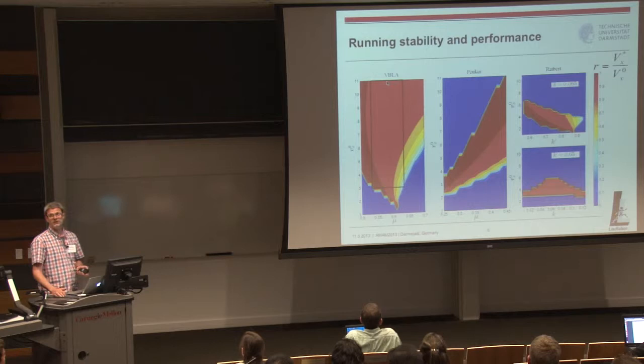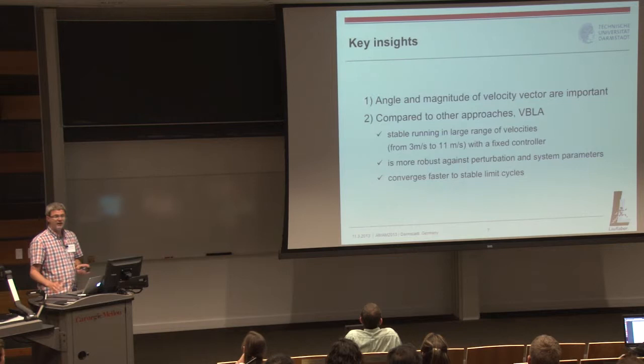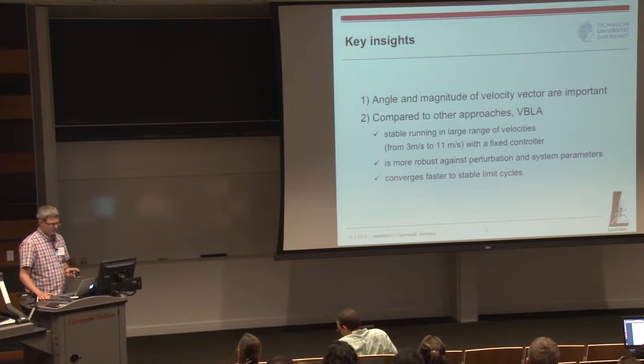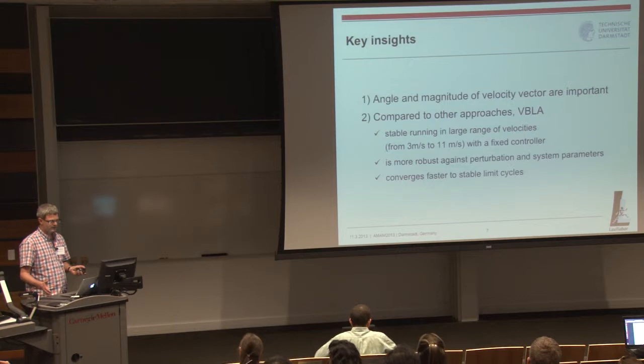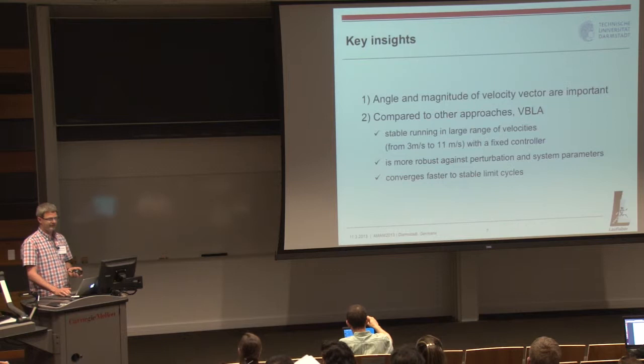The key insights: you can come up with the design of a flexible swing-leg control policy depending on the magnitude and direction of velocity. Compared to the other two approaches, this enriches the region of stable running to all velocities from 3 to 11 meters per second, which are relevant for human running. You don't have to adapt anything in the controller, and it is more robust against perturbations and system parameter variations.